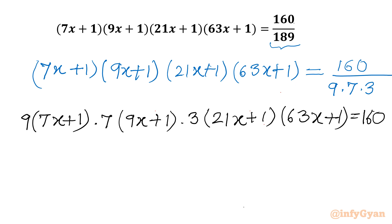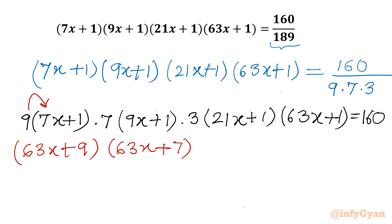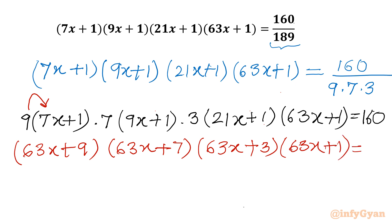Taking the multiplication: 9 with the first bracket gives (63x+9), the second bracket gives (63x+7), the third bracket gives (63x+3), and the fourth bracket remains (63x+1). The right-hand side is 160. Now you can see we have 63x in every bracket.